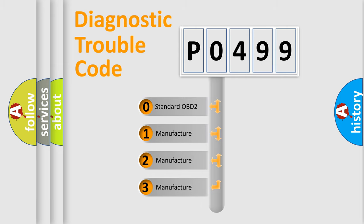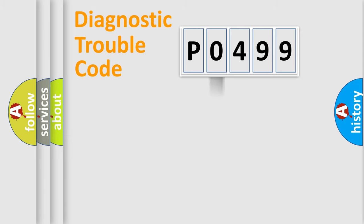If the second character is expressed as zero, it is a standardized error. In the case of numbers 1, 2, or 3, it is a manufacturer-specific error.